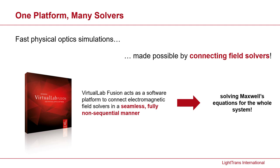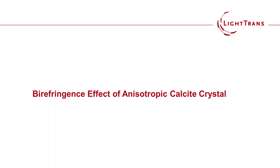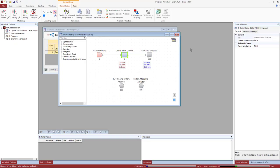Let's begin by discussing one of the first interesting effects that one encounters in the course of an optics education when it comes to anisotropic media. I'm referring to birefringence, or double refraction, whereby light traveling through a crystal block — if things are orientated correctly — produces two replicas of that light propagating through the crystal. I'm going to move to Virtual AppFusion now and discuss this experiment there, highlighting a couple of interesting aspects about the new components related to crystals and anisotropic media.